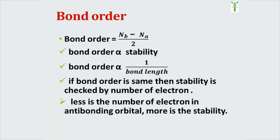First let's discuss what is bond order. Bond order means half the difference between the number of electrons in bonding molecular orbitals and the number of electrons in antibonding molecular orbitals. Bond order is directly proportional to stability — that means higher the bond order, higher the stability of the molecule.